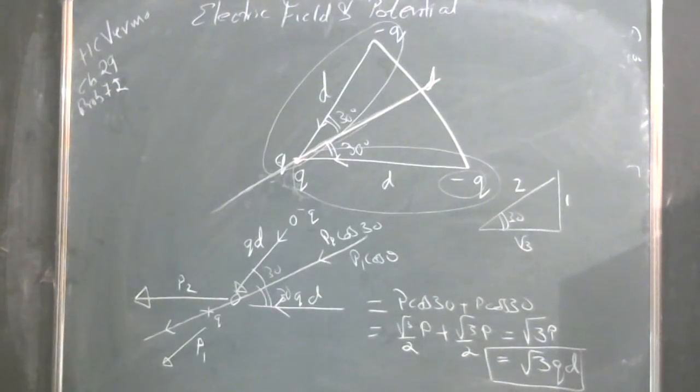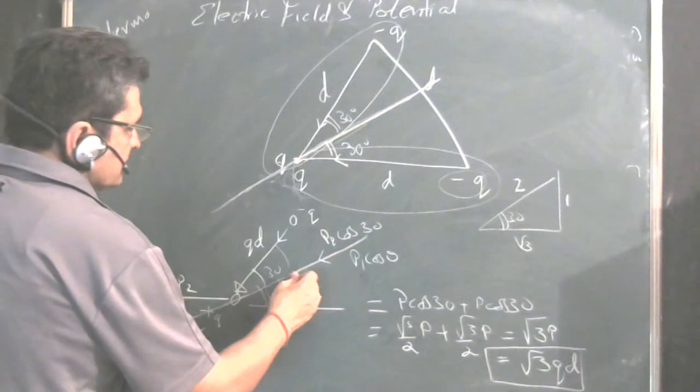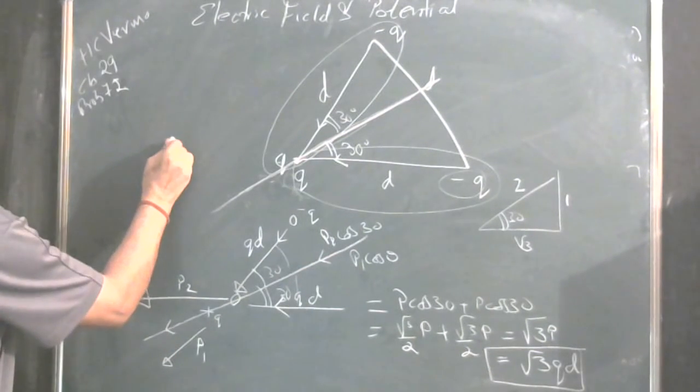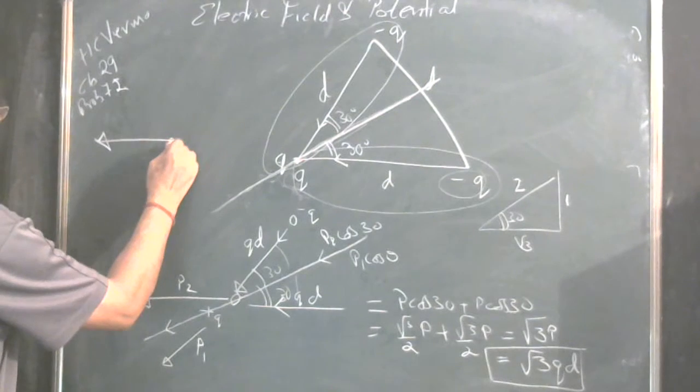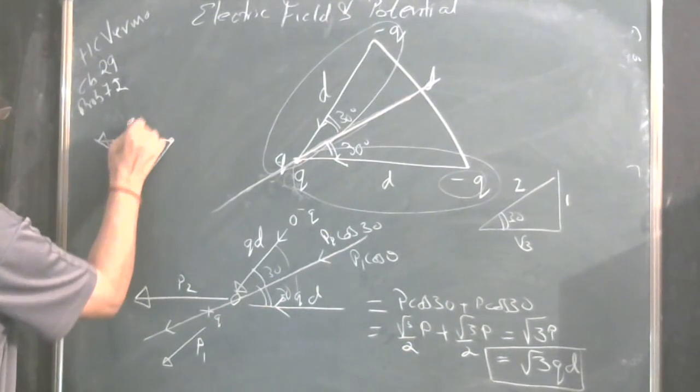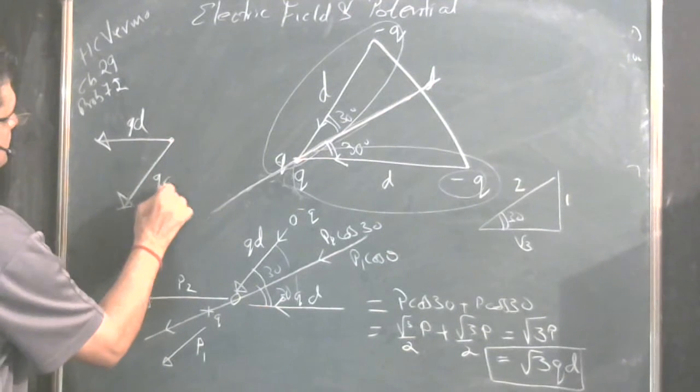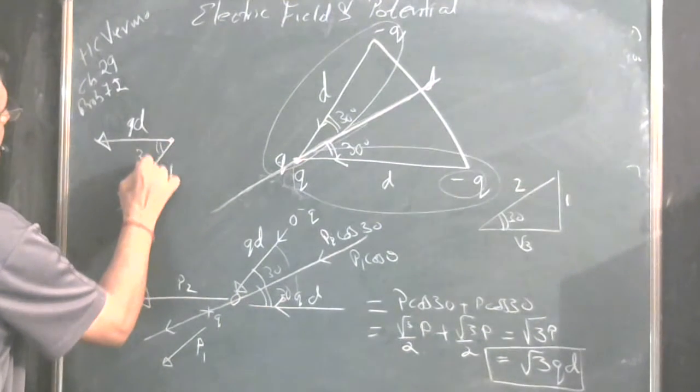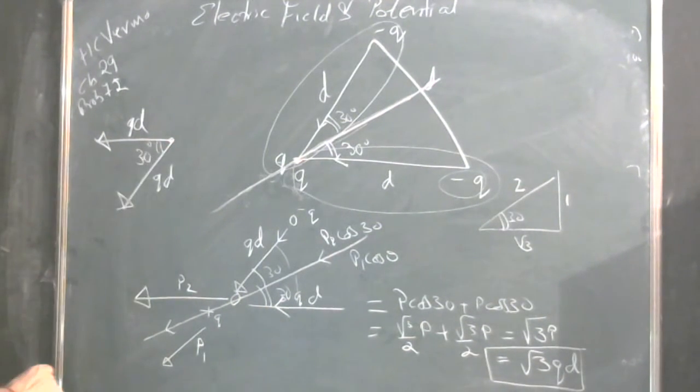We could have also done without taking the projection, we could have done using the vector form. This is one, this is another, and this is Q D, this is Q D. Angle between them is 30 degrees. You could have solved using the vector method also.